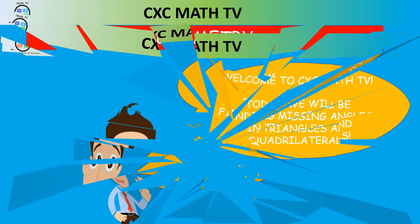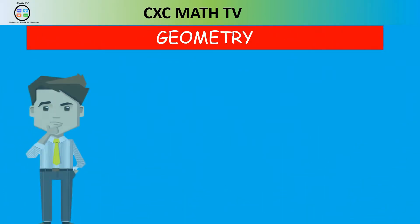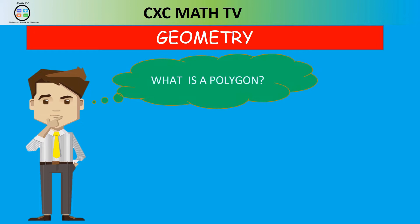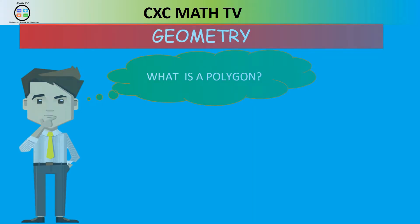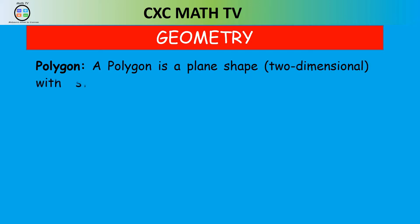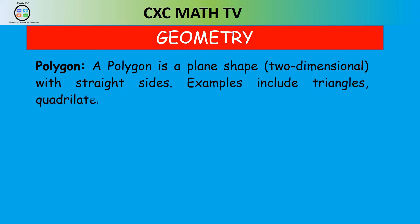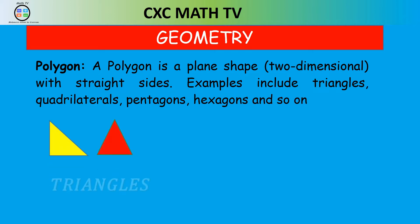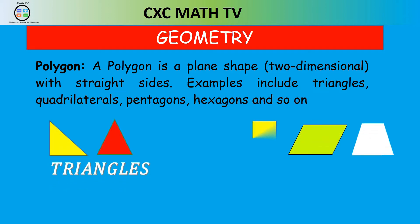The first thing we need to ask ourselves is: what is a polygon? A polygon is just a plane shape, a two-dimensional object with straight sides. Examples include triangles, quadrilaterals, pentagons, hexagons, septagons and so on. In this video we're just going to be focusing on triangles and quadrilaterals.